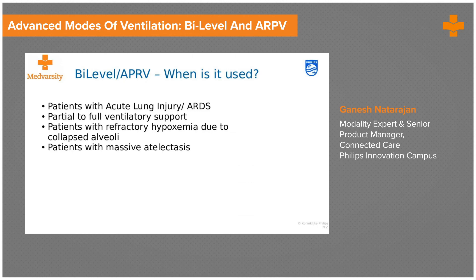The most common indications for bi-level and APRV are patients with ALI or ARDS where you don't want to change from partial to full ventilatory support, patients with refractory hypoxemia due to collapsed alveoli, and patients with massive atelectasis. There is considerable evidence of positive outcomes when these modes are used in this patient segment.